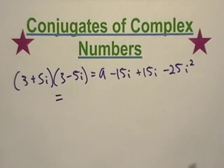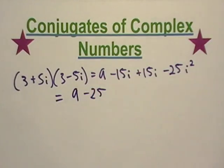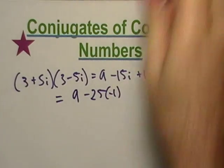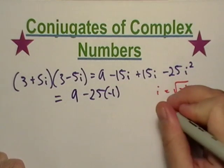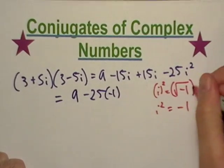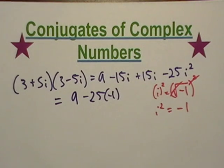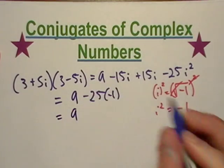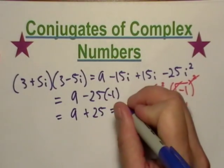A little simplification here, we get a 9 minus 25, and i squared is equal to negative 1, right? Remember that i is equal to square root of negative 1, so if I square both sides, the radical cancels out, and there I'm left with the imaginary unit. So what's a negative times a negative? It's a positive, right? It equals 34.